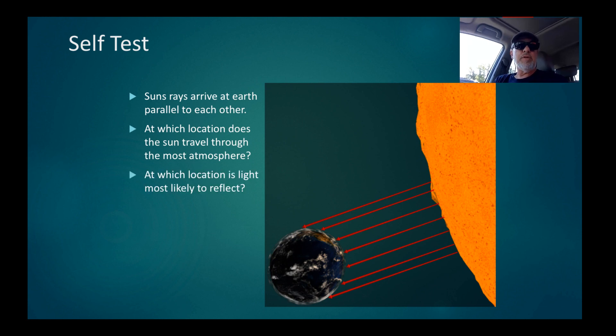Second test question: at which location is light most likely to be reflected? At the equator, at the poles, or somewhere in between? If you answered that it's reflected more at the poles, give yourself a great big pat on the back, because that's correct.